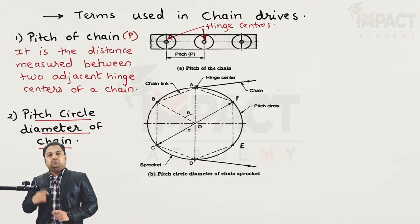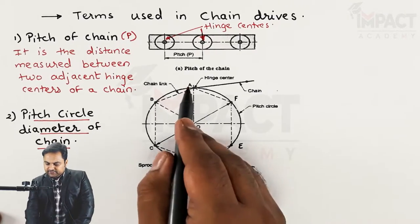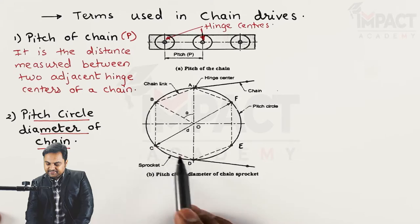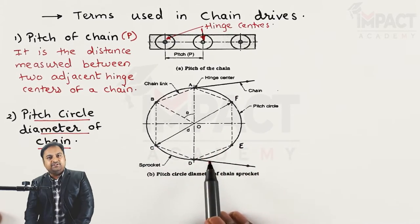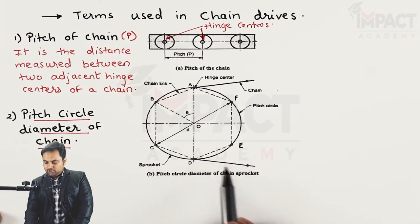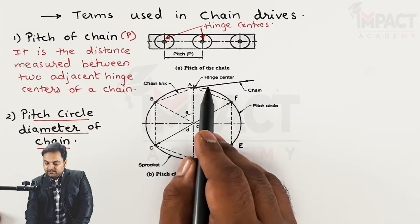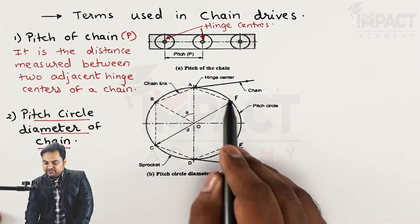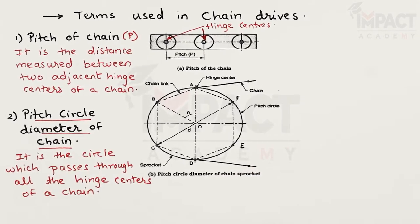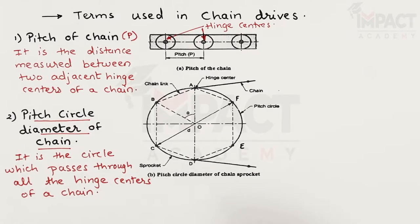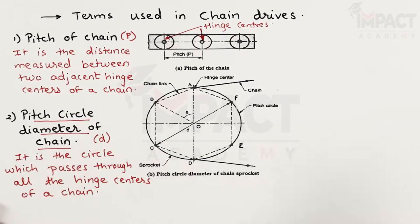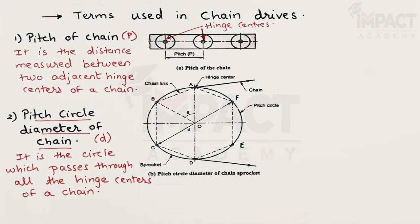The second definition is the pitch circle diameter of the chain. The chain is wrapped around the sprocket, and as it passes over the sprocket there are a number of hinge centers — for example, points A, B, C, D, E, and F as shown in the figure. The circle generated through all these hinge centers is called the pitch circle, and its diameter is denoted by D.